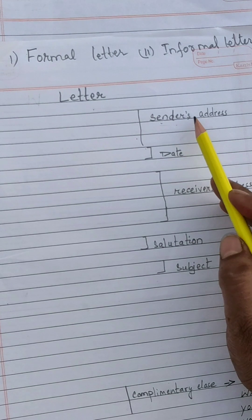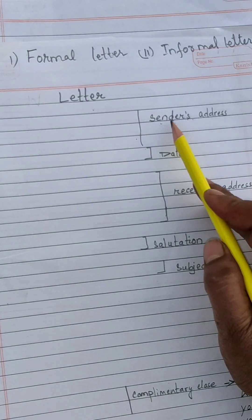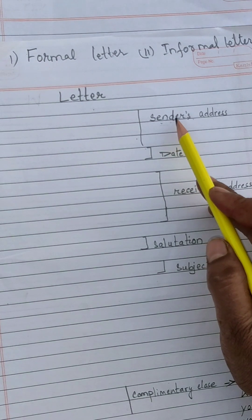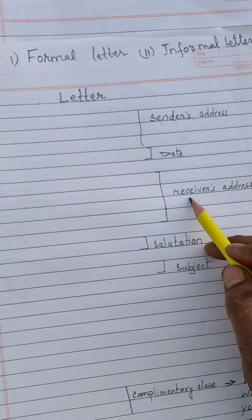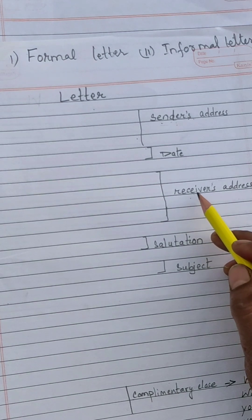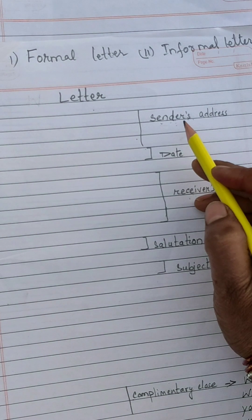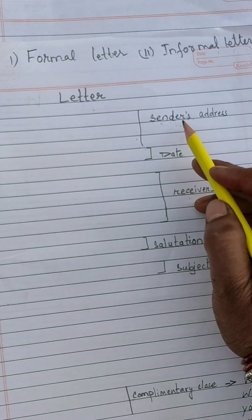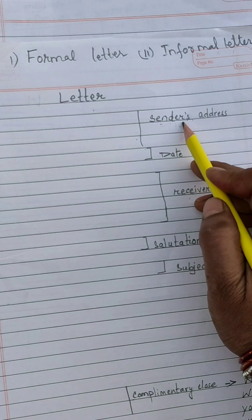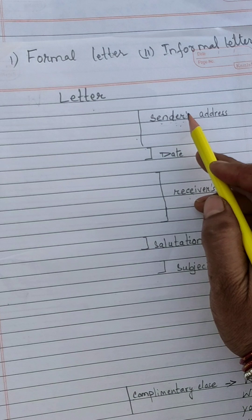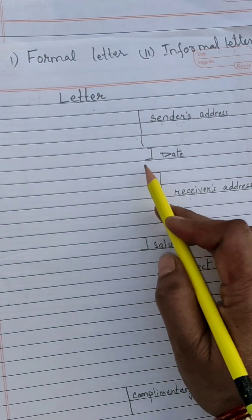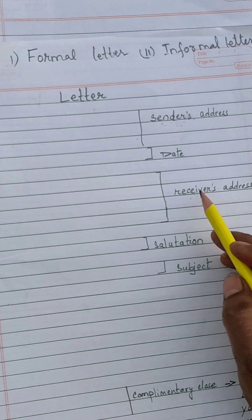You have to write your address. The sender means who is writing. The person who will receive the letter is the receiver, and the person who is writing is known as the sender. जो लिखता है letter उन्हें कहा जाता है sender — it means जो भेजता है, send मतलब भेजना। So: sender address, then date, then receiver address.